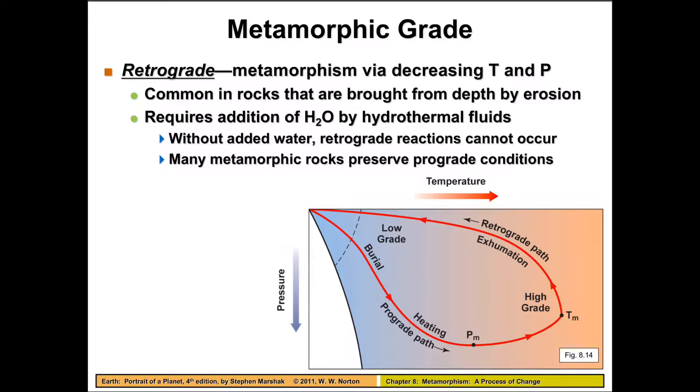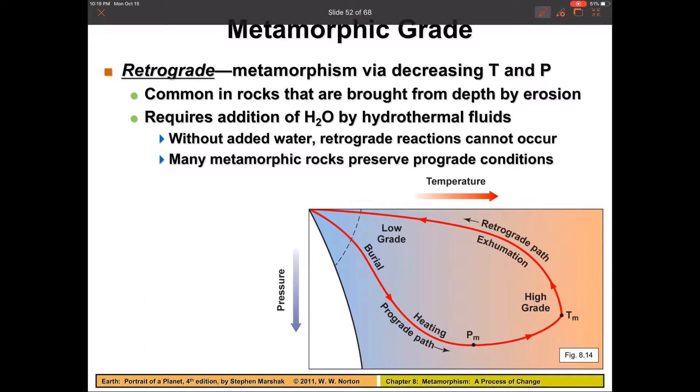Retrograde is basically the opposite, where we have metamorphism that happens due to decreasing temperature and pressure. And this is basically going to happen due to those phase changes. As we take a rock and bring it up really quickly, exhume it really fast, it experiences those low temperatures and low pressures. And some of those rocks just might not be stable at low pressures and temperatures, and that will cause them to metamorphose.